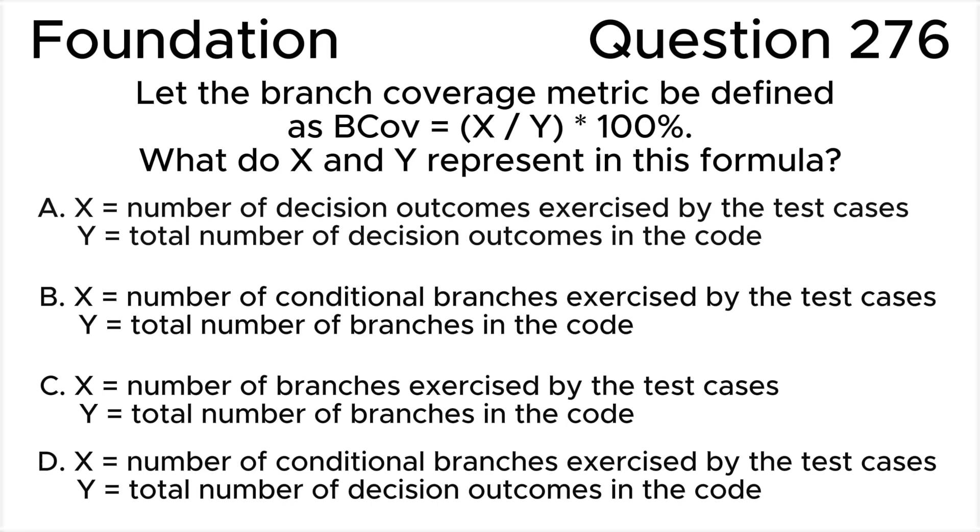Option C: X equals number of branches exercised by the test cases, Y equals total number of branches in the code. Option D: X equals number of conditional branches exercised by the test cases, Y equals total number of decision outcomes in the code.